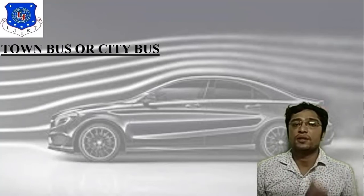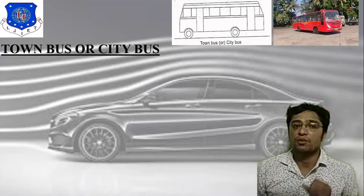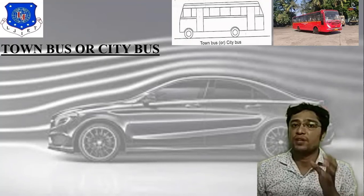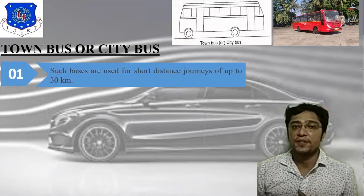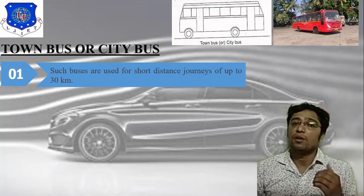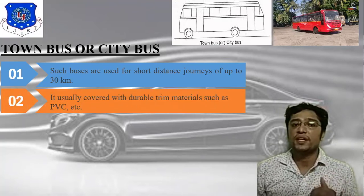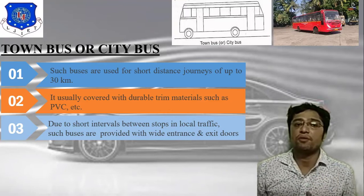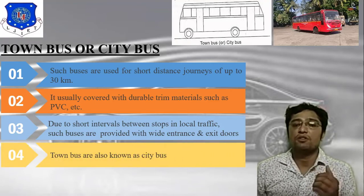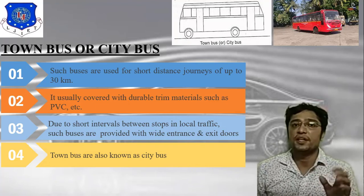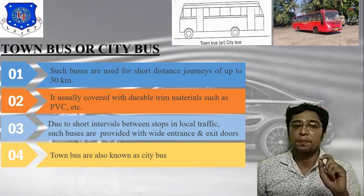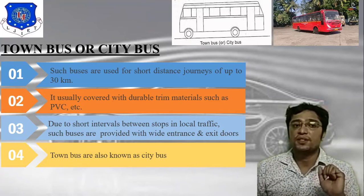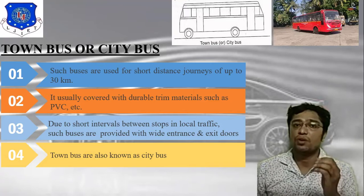The town bus, also known as the city bus, is used for short distances of up to 30 km. It is usually covered with durable material such as PVC. Due to short intervals between stops and local traffic, such buses are provided with wide entrance and exit doors. AMTS buses are a common example of city buses used for short distance journeys.